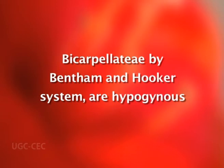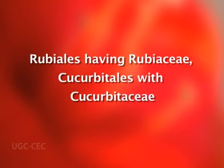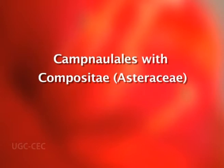The Sympetalae includes gamopetalous families; it commences with Ericales, Primulales, etc. The orders Contortae and Tubiflorae include families that were recognized under Bicarpellatae by Bentham and Hooker's system and are hypogynous. Rubiales with Rubiaceae, Cucurbitales with Cucurbitaceae, and Campanulales with Compositae are placed at the end, as they have epigynous families.